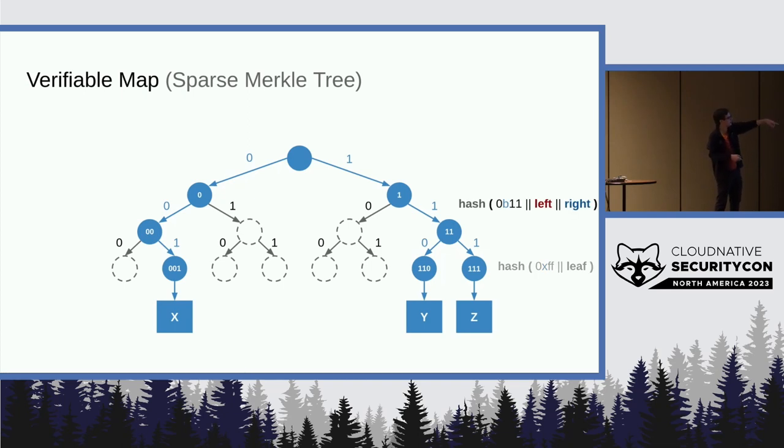Then we can hash branches like the 11 branch over there and show that it combines the two values of its children. But we also have these branches out here that only have one subchild, right? Only one subtree to the left or right. And in that case, we prevent collision attacks by modifying the prefix.